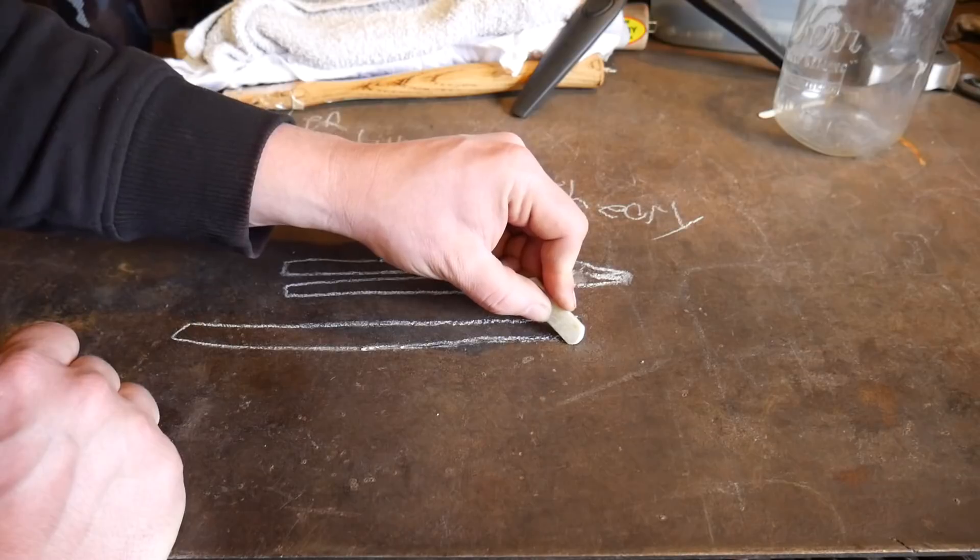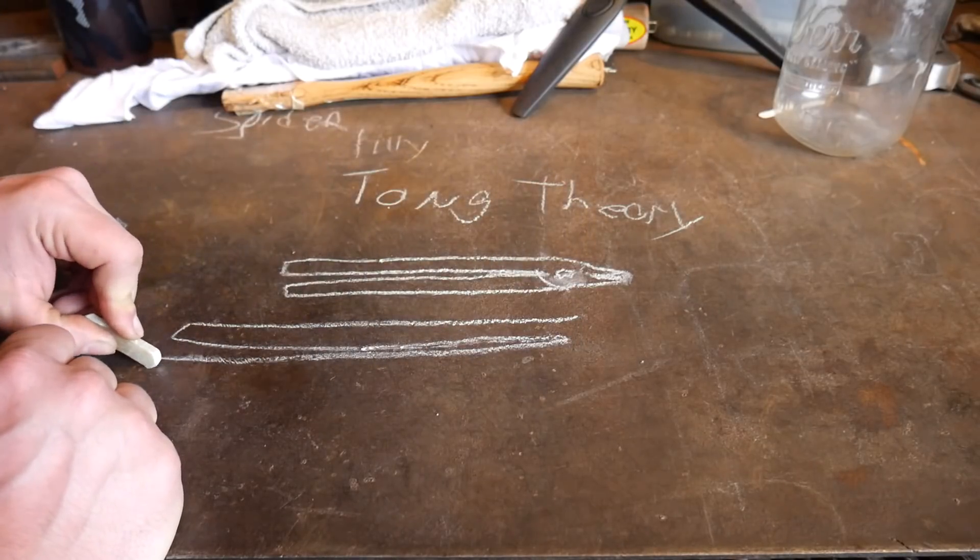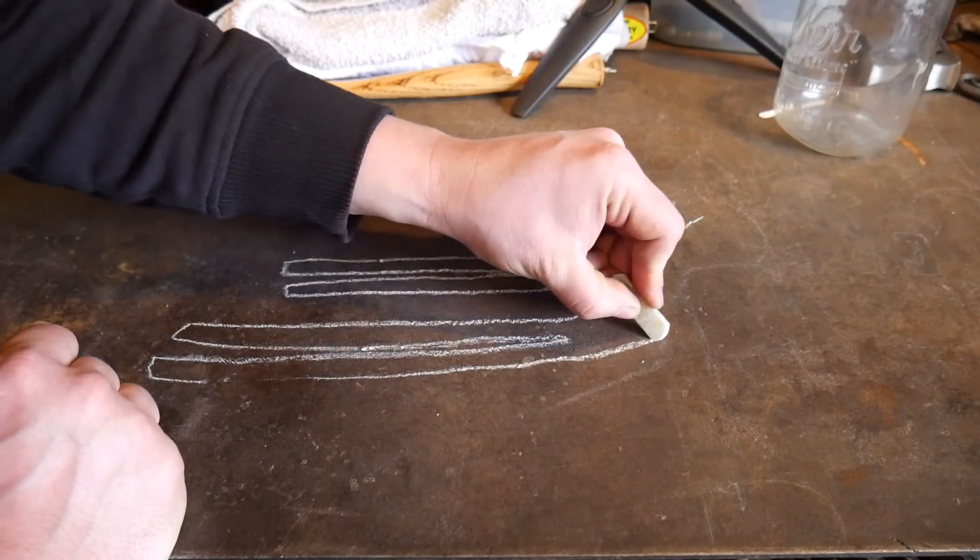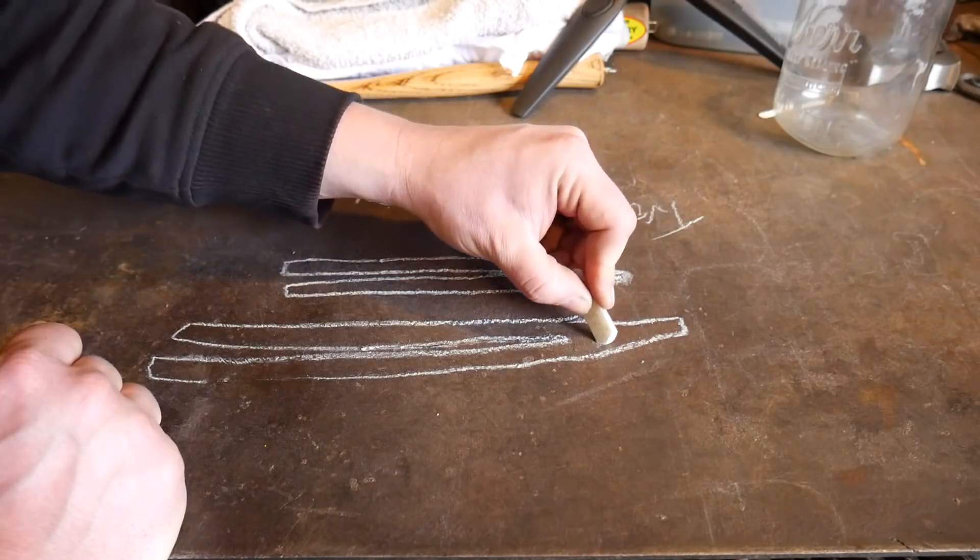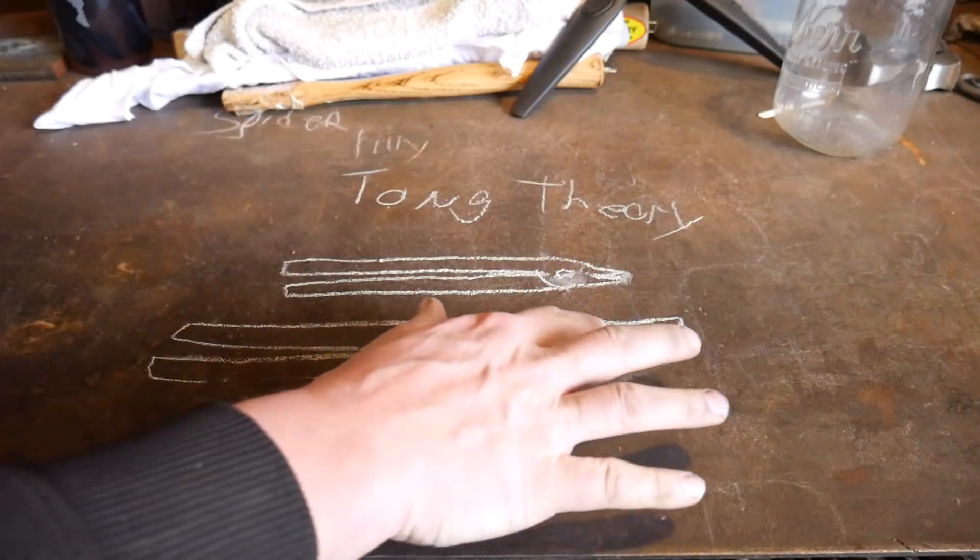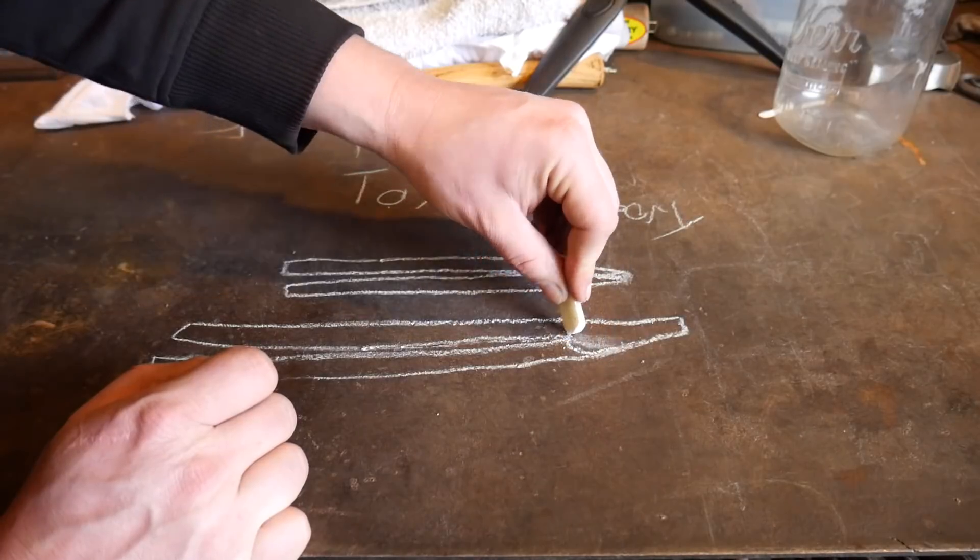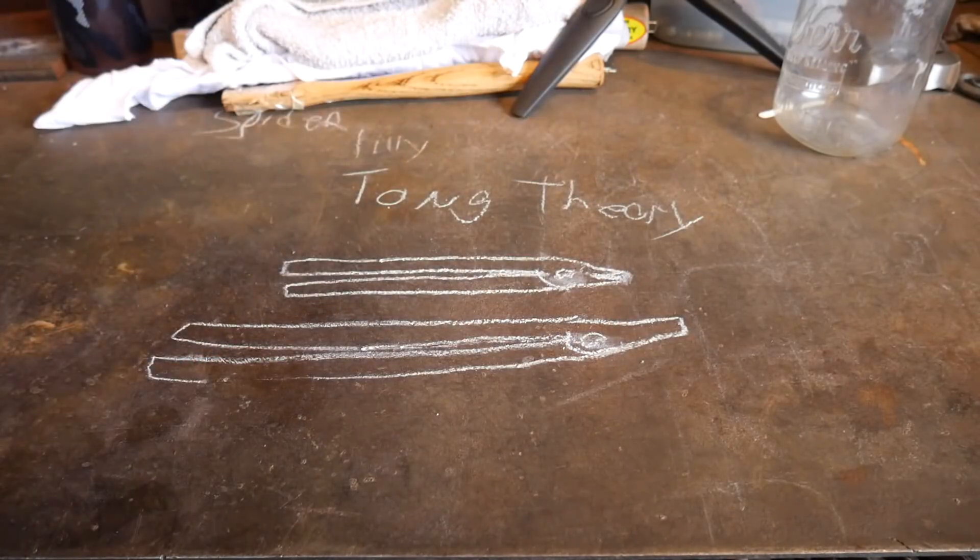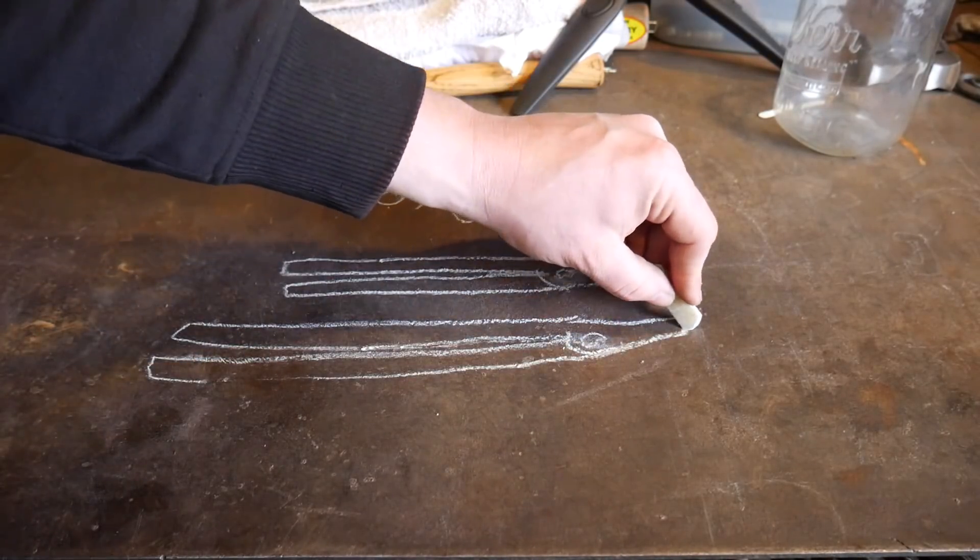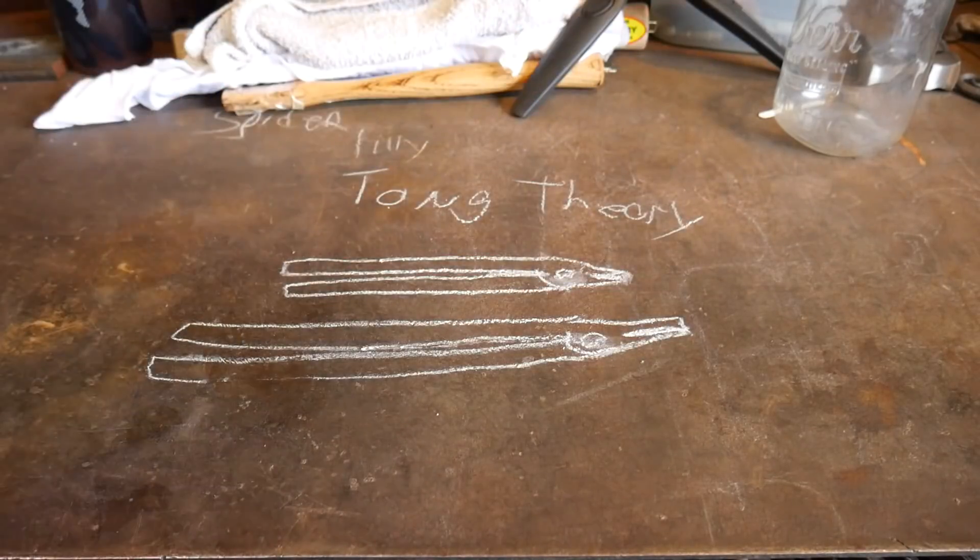And then we're going to draw another pair of tongs with longer handles. And I promise this has a point if you just stick with me. So we're going to just draw this out. They don't have to be perfect, you just have to understand they're tongs. These are both flat jaw tongs that I'm trying to illustrate.